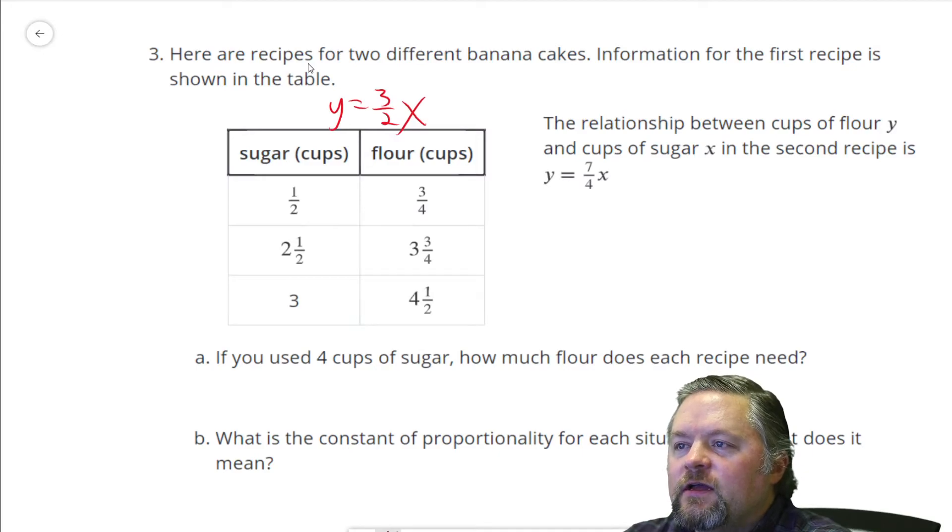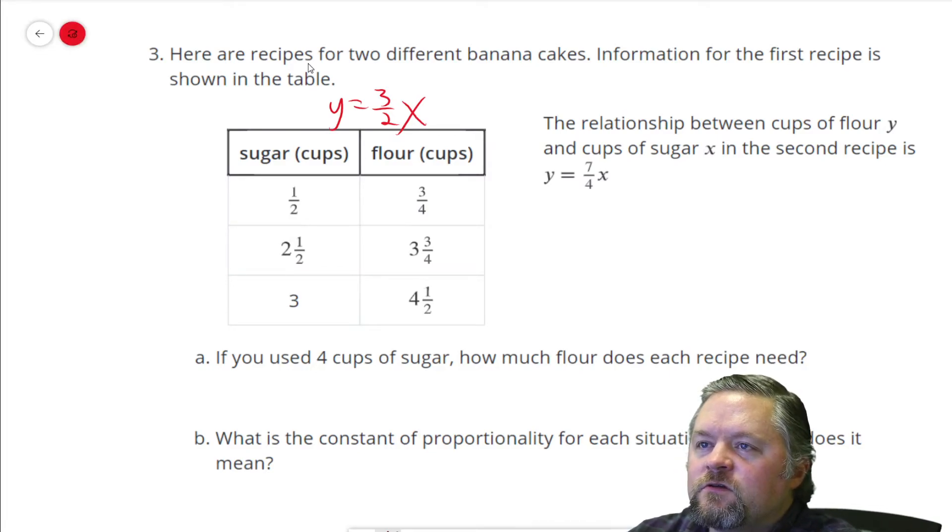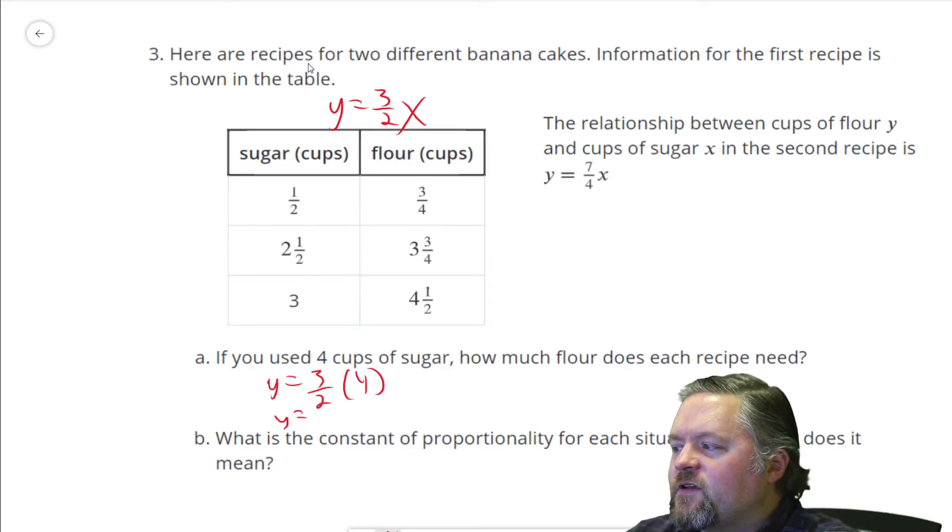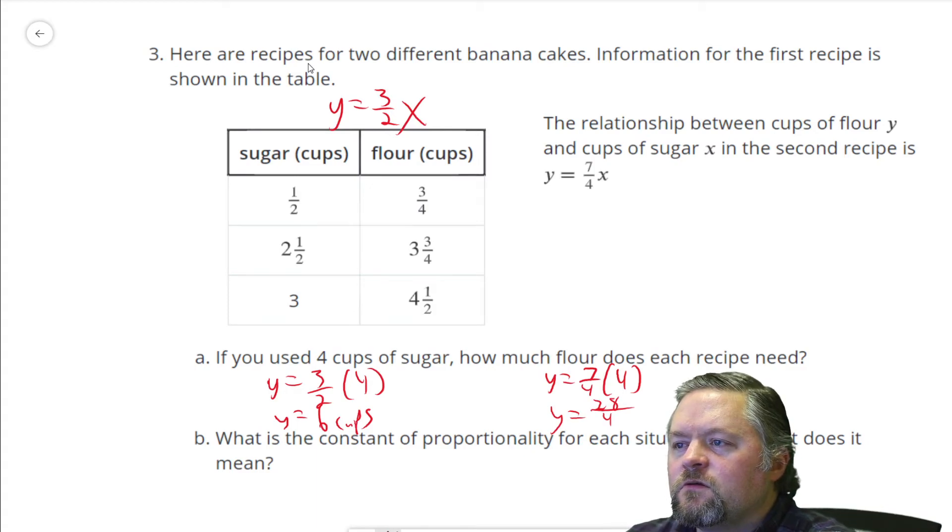If you use four cups of sugar, how much flour does each recipe use? Cups of sugars are x for this first one. If y equals three over two times our cups of sugar, three over two times four, one and a half times four is six. That one uses six cups. Now our other one is y equals seven over four times four cups. Y equals seven times four is twenty-eight over four, which is twenty-eight divided by four is seven cups.